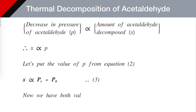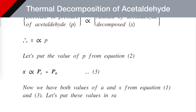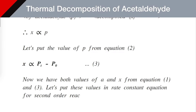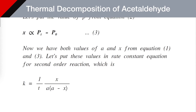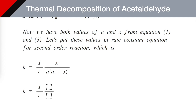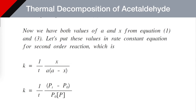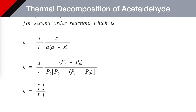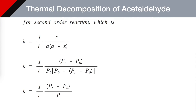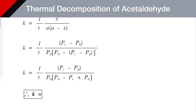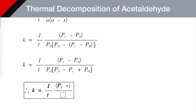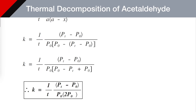Now we have both values of A and X from equations 1 and 3. Substituting these into the rate constant equation for a second order reaction — K = (1/T) × X / (A × (A − X)) — we get K = (1/T) × (Pt − P₀) / P₀ × (P₀ − (Pt − P₀)). Opening the bracket: K = (1/T) × (Pt − P₀) / (P₀ × (2P₀ − Pt)).